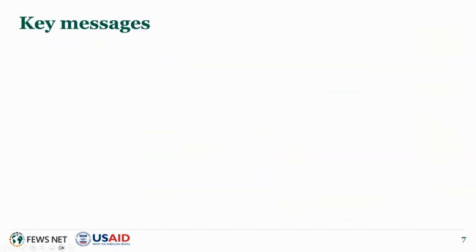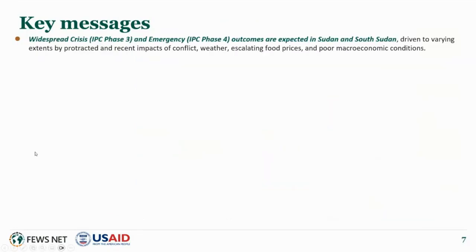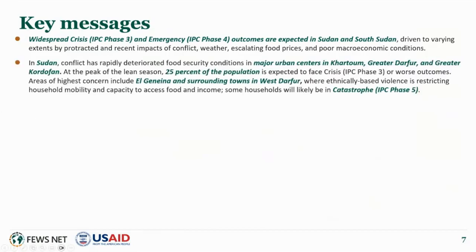Turning to the key messages for the region: overall, widespread crisis IPC phase 3 and emergency IPC phase 4 outcomes are expected in Sudan and South Sudan, driven by protracted and recent impacts of conflict, weather, escalating food prices, and poor macroeconomic conditions. In Sudan, conflict has rapidly deteriorated food security conditions in major urban centers in Khartoum, Central Darfur, Greater Darfur, and Greater Kordofan. At the peak of the lean season, 25 percent of the population is expected to face crisis IPC phase 3 or worse outcomes.